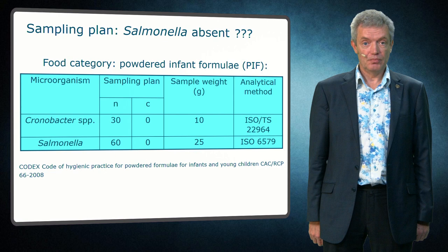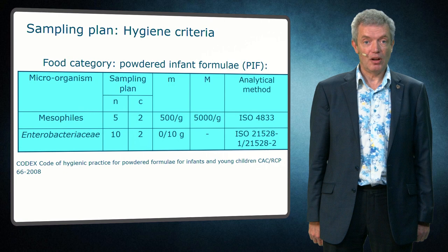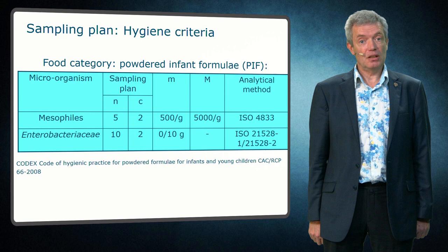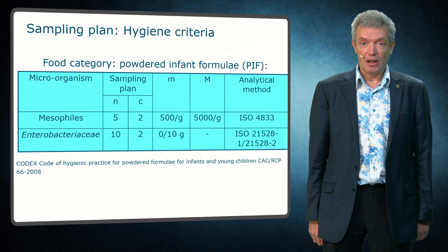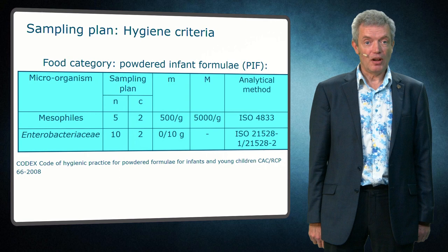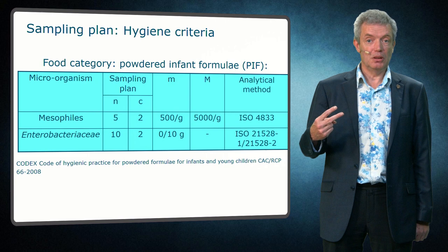In the Codex Hygiene code for PIF, hygiene criteria are also described for mesophiles and introductory assay. Here you see two important differences from the safety criteria. First, the C value is now equal to two, so two of the samples are allowed to be positive. For the antibacterial assay the test remains a qualitative present/absent test in 10 grams. But for mesophiles a quantitative test is used, so the microbiological limit is a concentration. This is a three-class sampling plan with a lower limit small m and a higher limit big M. None of the five samples are allowed to be above 5000 per gram, two samples are allowed to be between 500 and 5000, and the others have to be below 500.